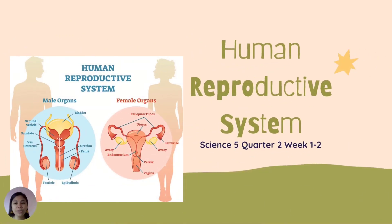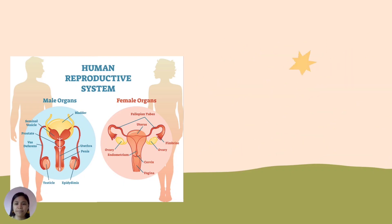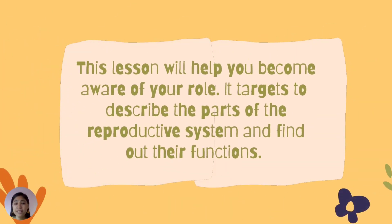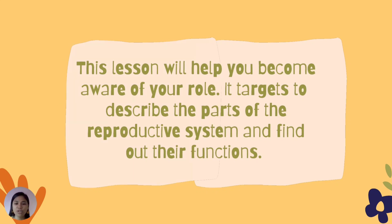Science 5, Quarter 2, Week 1-2: Human Reproductive System. This lesson will help you become aware of your role. It targets to describe the parts of the reproductive system and find out their functions.